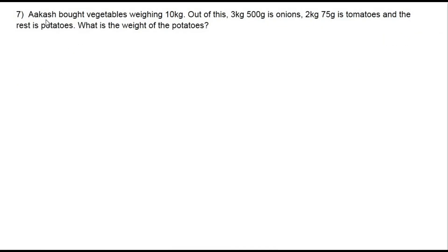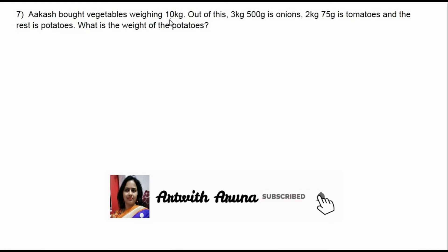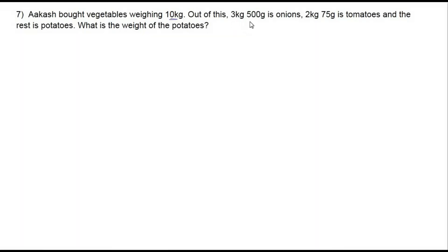The last question: Akash bought vegetables weighing 10 kilogram. Out of this 3 kilogram 500 gram is onions, 2 kilogram 75 gram is tomatoes, and the rest is potatoes. What is the weight of the potatoes? According to the question, Akash bought a total of 10 kg of vegetables. We know the weight of onions and tomatoes, but not potatoes. First we add the weight of the two known vegetables, then subtract from 10 kg.